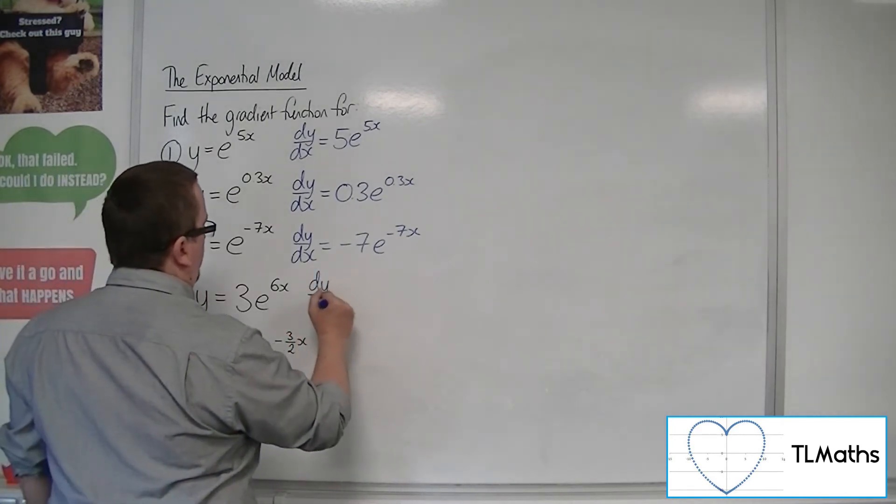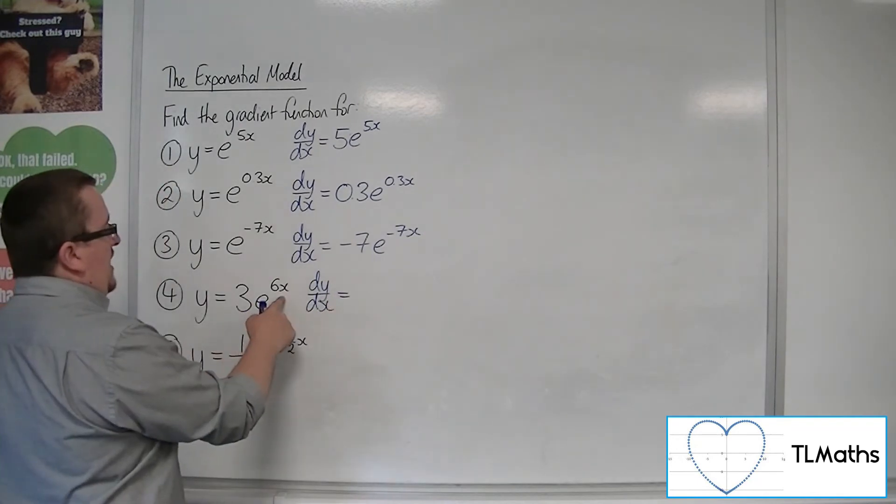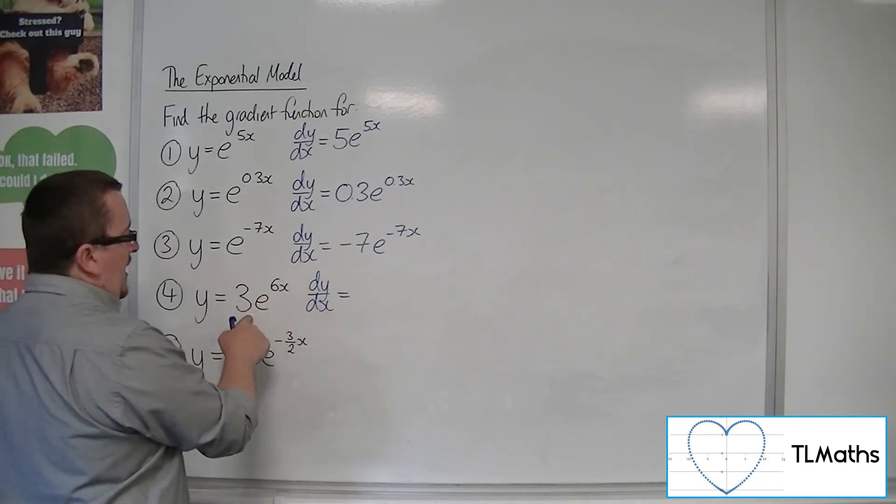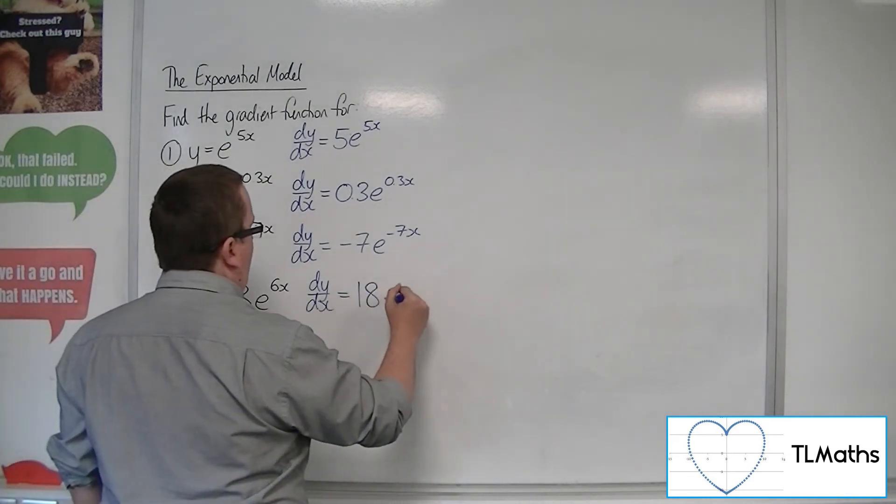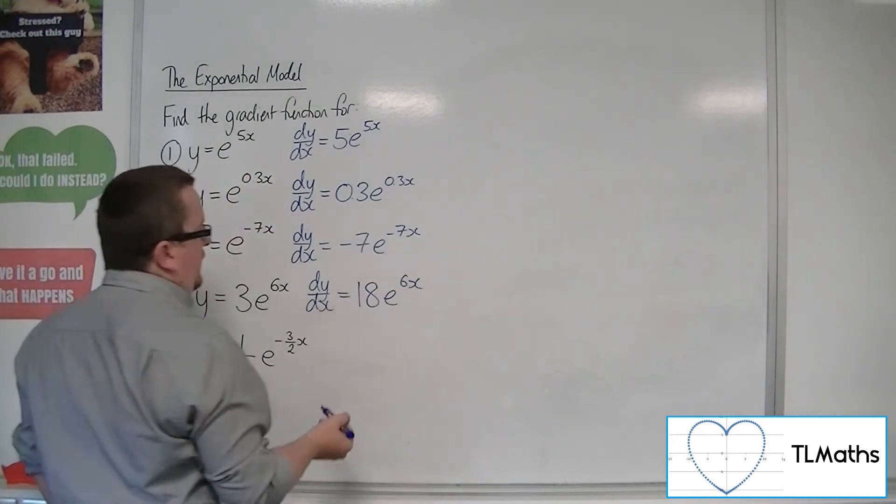Number 4, 3e to the 6x. So the 6 comes down to the front and what it's going to do is multiply with that 3 to make 18e to the 6x.